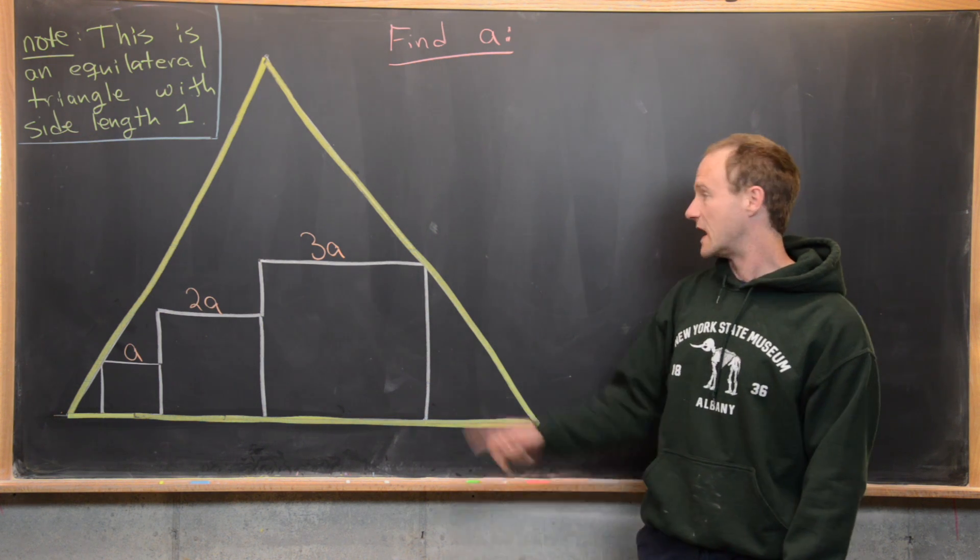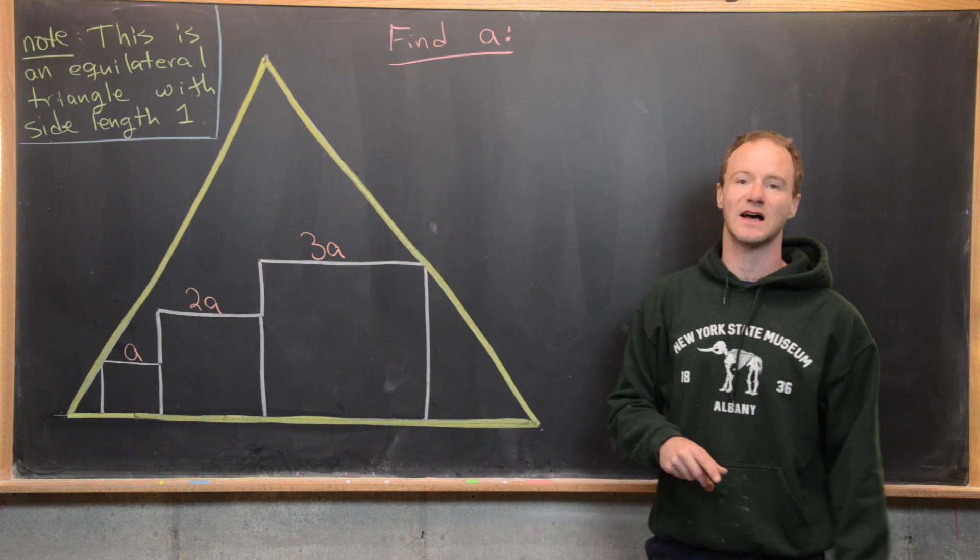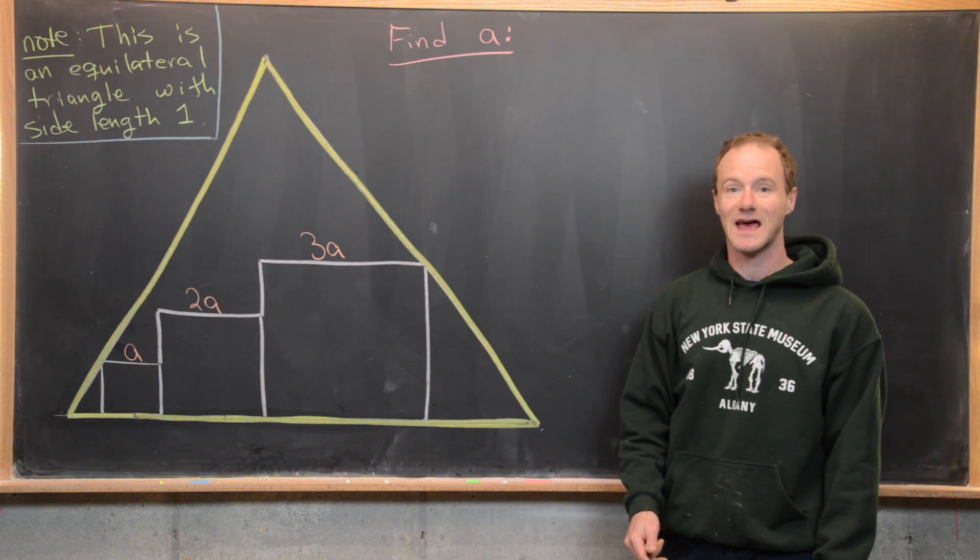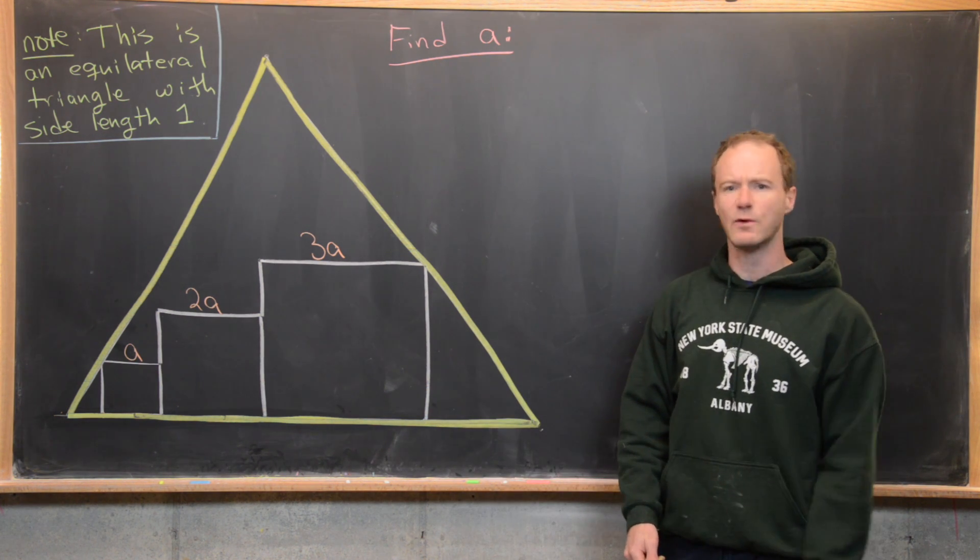And then next to that we've got one of side length 3a and then again this vertex is intersecting the side of the equilateral triangle and what we want to do is find a. So let's see what we can cook up.